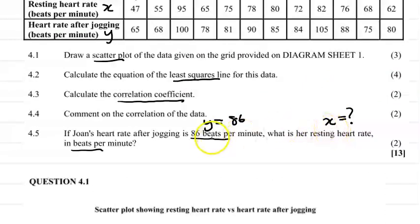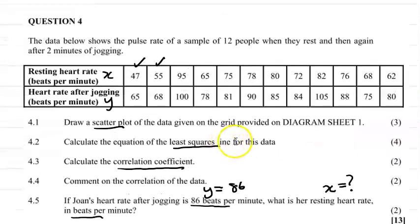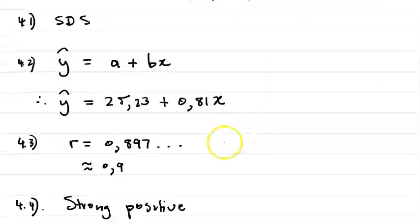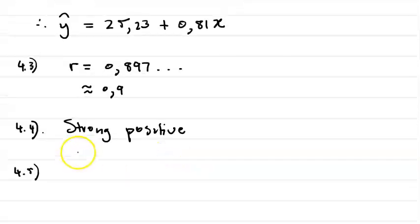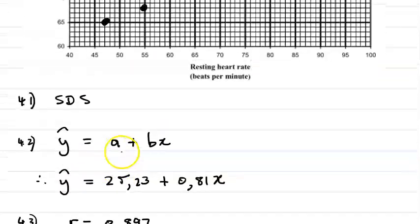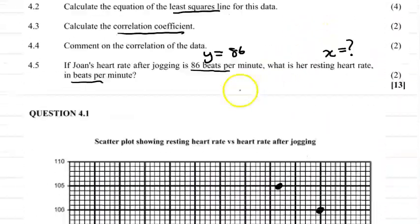So therefore we want to calculate the x value. Now we would normally not calculate the x value from our equation of the least squares equation line, but because we have a very strong positive relationship we may do so in this case. So therefore we can now substitute into our equation. So that would be 86.